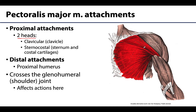The clavicular head, as its name would suggest, attaches to the clavicle. And a sternocostal head, which you can see is the larger one. This will attach to the sternum — that breastbone — and the costal cartilages, which are how the ribs attach to the sternum. The distal attachment is on the proximal humerus, specifically the crest of the greater tubercle of the humerus.